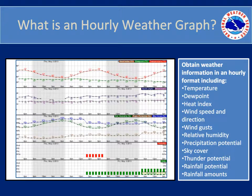Hourly weather graphs are helpful in obtaining a more detailed weather forecast for the variables listed on the right-hand side of this slide. Even though the forecast may call for an 80% chance of rain, maybe rain is only expected in the afternoon — the hourly weather graph would show you this. In addition, if you are concerned about water freezing on roadways, you may be interested in when the temperature is expected to drop below 32 degrees. You could determine the forecast timing for this using the temperature curve in the top part of the graph. As you use the hourly weather graph more, you will find even more uses for the information.